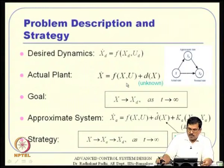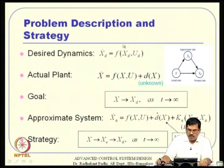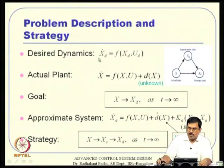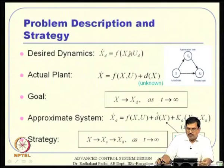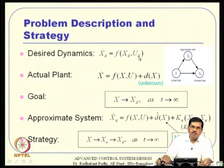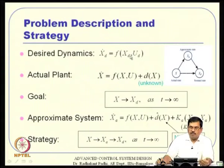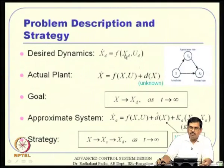In more mathematical terms: the desired dynamics is already known to us in the form of a nominal control design, where the subscript d stands for the desired objective. Using this nominal model we have already designed a controller for whatever objective we want to achieve, so u_d is also available to us for further adaptive control design. We assume not only that the dynamics is known, but that we have already designed a nominal controller with the help of that model.